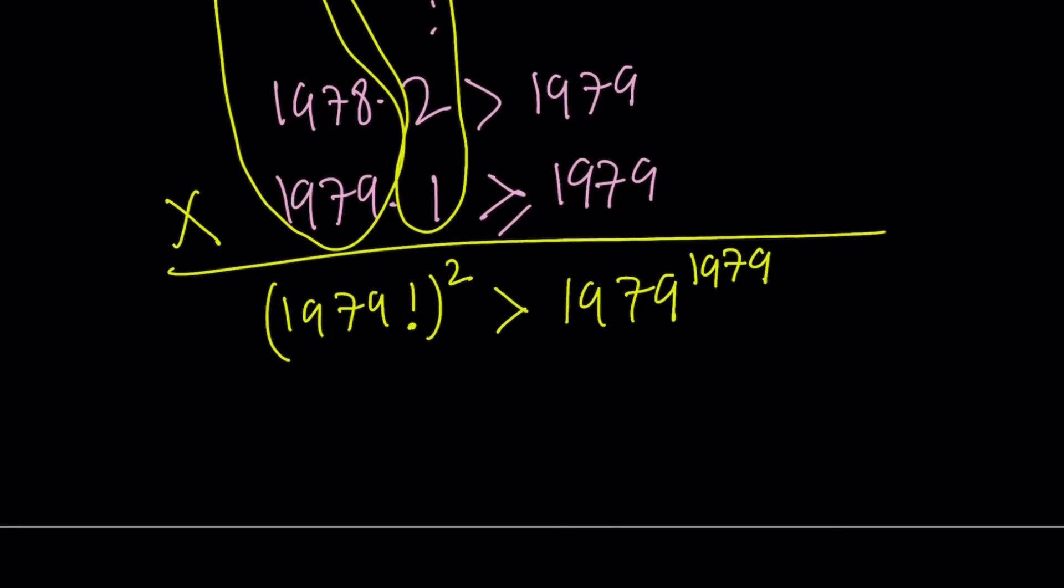Now let's look at the number of digits. The square of the factorial is a number with 11,333 digits. Wow, that's crazy. And 1979 to the 1979th power is a number with 6,524 digits. So it's almost twice the number of digits. Obviously they're very much apart - this number is much, much larger.